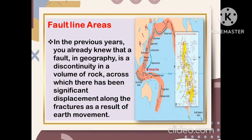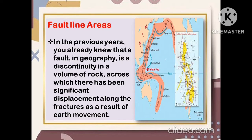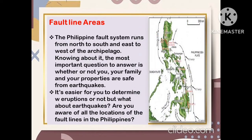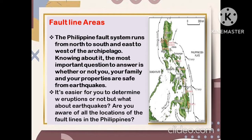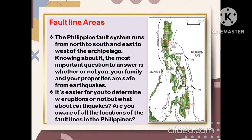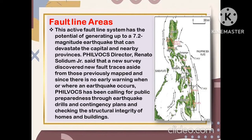Another area or location exposed to hazards that may lead to disaster involves fault lines. A fault in geography is a discontinuity in the volume of rock across which there has been significant displacement along the fracture as a result of Earth's movement. The Philippine fault system runs from north to south and east to west of the archipelago. Knowing about it, the most important question is whether you, your family, and your properties are safe from earthquakes. This active fault line system has the potential of generating up to a 7.2 magnitude earthquake that can devastate the capital and nearby provinces.